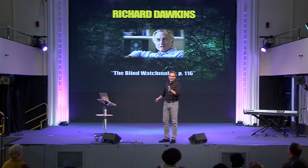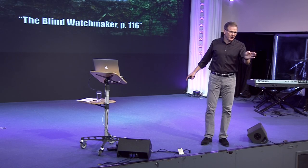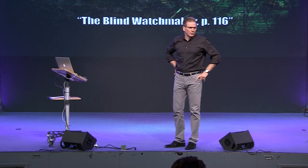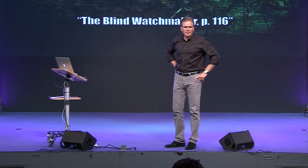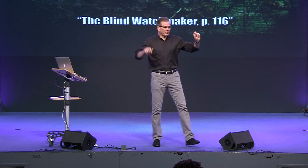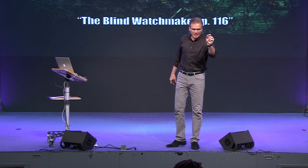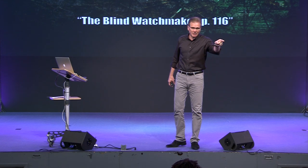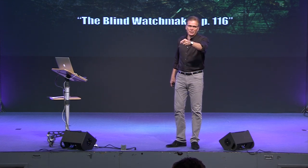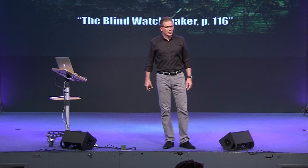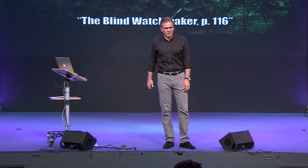They realize the universe is so orderly there could be an orderer, but they don't want that orderer to bring morality with them. The elephant in the room is not evidence — it's morality and accountability. People don't want it. Most of us are not on a truth quest; we're on a happiness quest. We're going to believe whatever we think will make us happy. But you can make yourself happy short-term by doing stupid, sinful things, and over the long term it's a disaster. The only way to get true contentment is to go straight through truth, and Jesus is the truth.